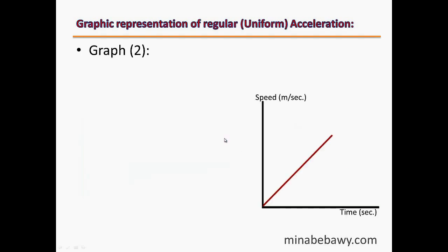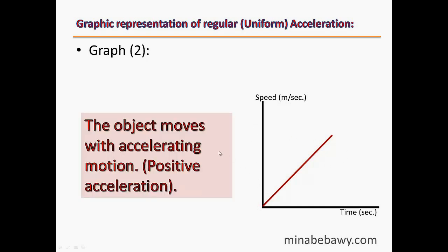The second graph is between speed in m/s over the y-axis and time in seconds over the x-axis. It is represented by a straight line passing through the point of origin. By increasing the time, the speed also increases gradually, which means this object moves with accelerating motion or positive acceleration.